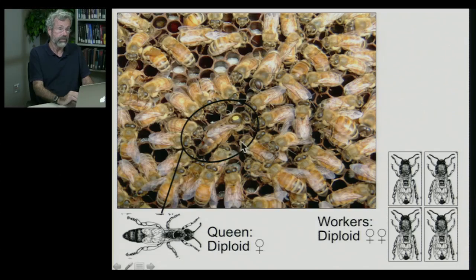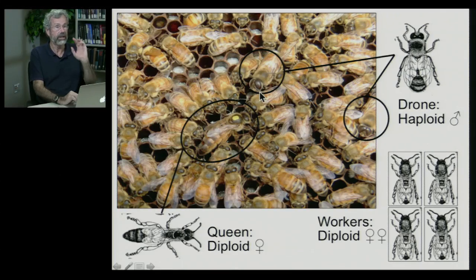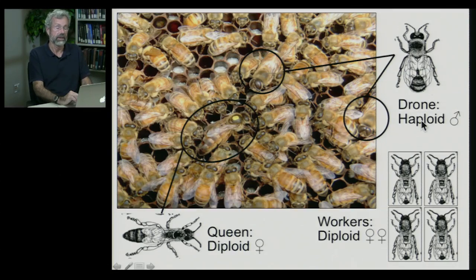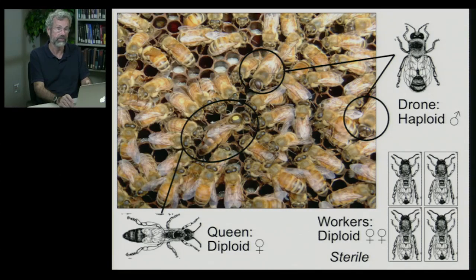Workers do all this on behalf of a queen, who is also diploid — these workers are her daughters. Also within the hive are a few larger individuals who don't do much: they're not keeping the nest clean or collecting pollen, but getting ready to go off and spread genetic material by mating with queens in other nests. These are the drones — they're male and haploid, the result of a virgin birth: unfertilized eggs that develop into males. All the workers in the hive are sterile females.